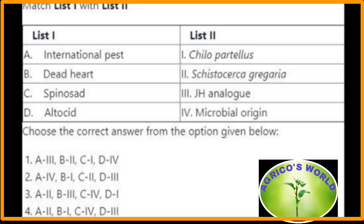Matching of list one with list two: dead heart is a damage symptom caused by the attack of Chilo partellus stem borer. Spinosad is of microbial origin. Altosid is a juvenile hormone analogue. From the given options, the right answer is the fourth option.